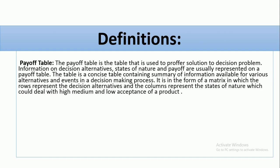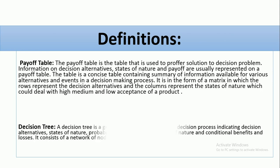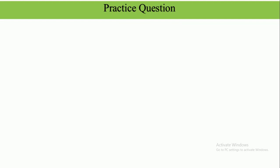We also have some key definitions. A payoff table is a table that profiles solutions to decision problems. A decision tree is a graphical representation of the decision process that involves all the structures: decision alternatives, states of nature, probabilities attached to the states of nature, and conditional benefits and losses. It consists of a network of nodes and branches.